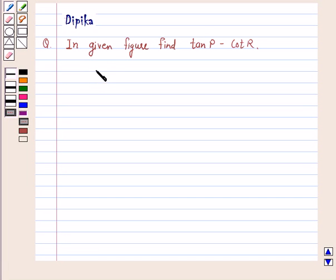Hi and welcome to the session. I am Deepika here. Let's discuss the question: in given figure find tan P minus cot R.